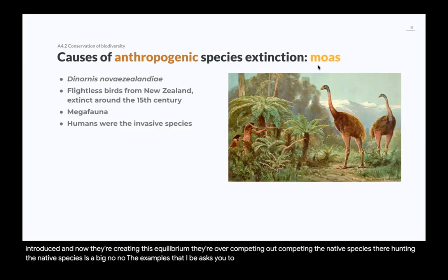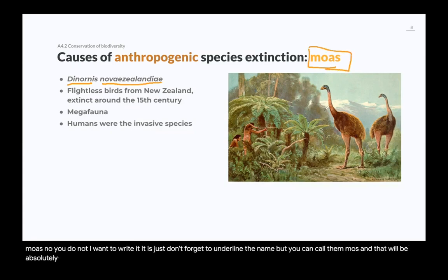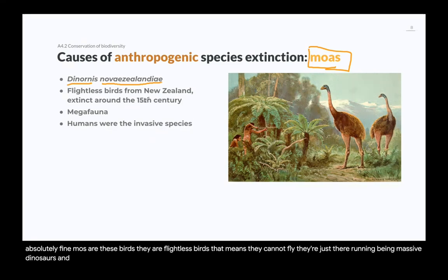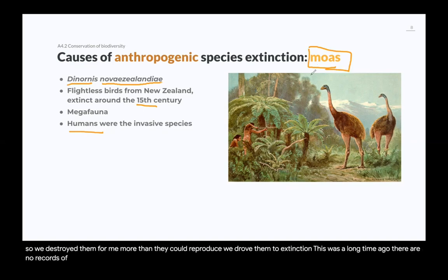The examples that IB asks you to know: Moas. You do not need to know the scientific name, but you can call them Moas and that will be absolutely fine. Moas are flightless birds — they cannot fly — massive bird-like creatures. They were driven extinct around the 15th century. We were the invasive species. We arrived and overhunted them for meat more than they could reproduce, driving them to extinction. There are no records of Moas living anymore.